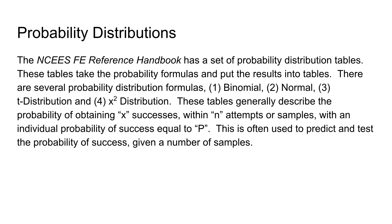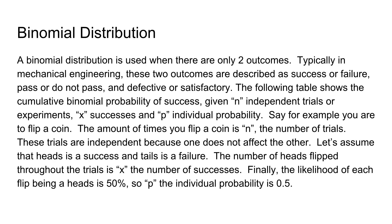This is used to predict and test the probability of success given a number of samples. The binomial distribution is used when there are only two outcomes. In mechanical engineering, this typically means success or failure, passed or does not pass, defective or satisfactory. The following table will show cumulative binomial probability of success given n independent trials or experiments, x successes, and p the individual probability.